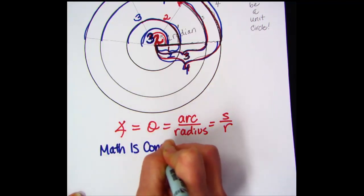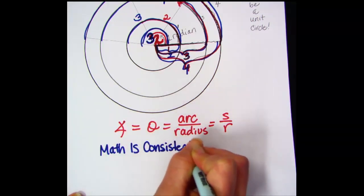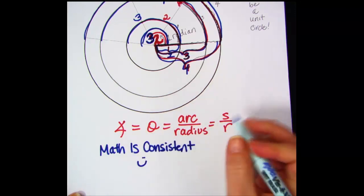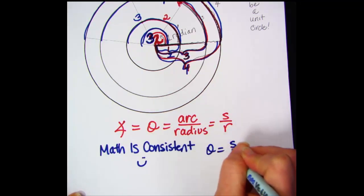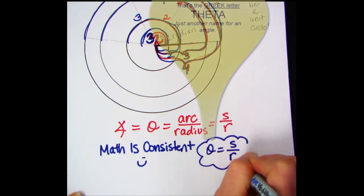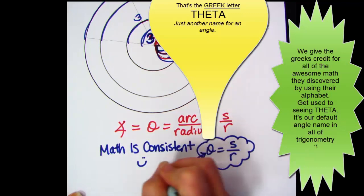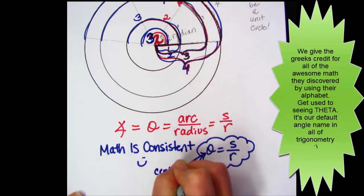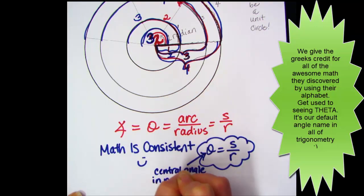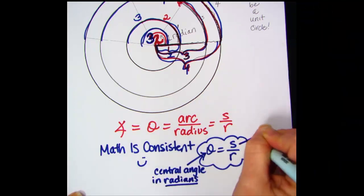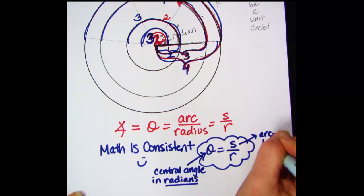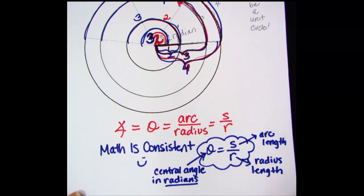Math is consistent. The formula you need to know is theta equals s over r. Theta is just a Greek letter for an angle name—don't panic about that little O-looking thing. It means the central angle of a circle measured in radians. We give the Greeks credit for all this. S represents arc length, and r represents radius length. Theta equals arc over radius, or s over r.